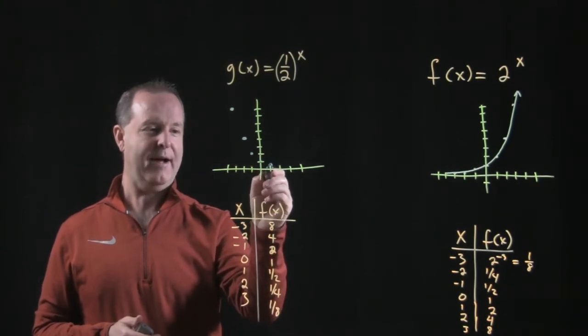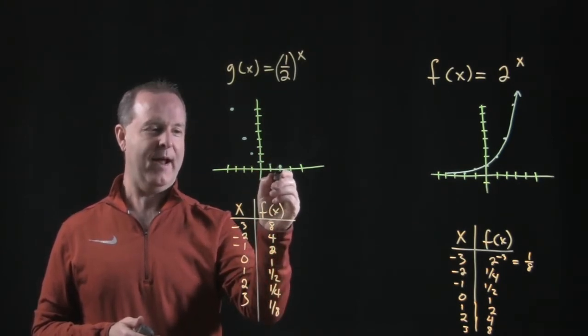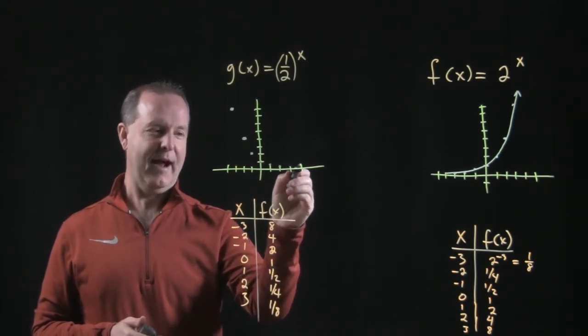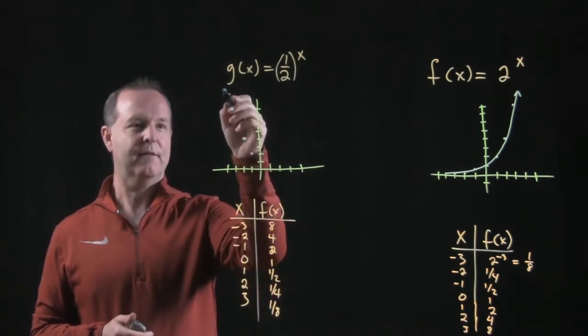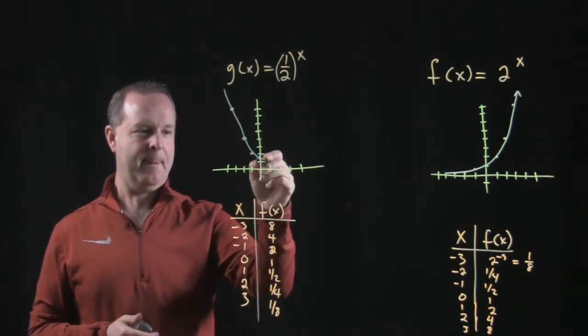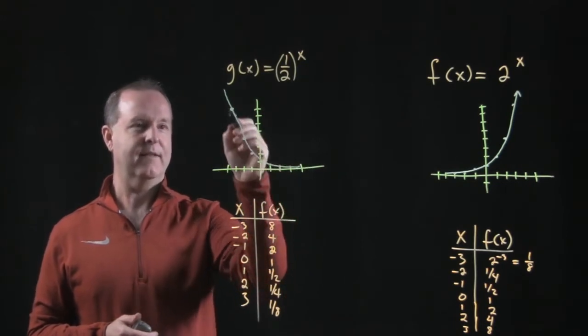Half of 1 is a 1 half. Half of 1 half is a 1 fourth. Half of 1 fourth is a 1 eighth. Half of 1 fourth or eighth is a 16th. So I start to have a graph of my airplane going into a landing there.